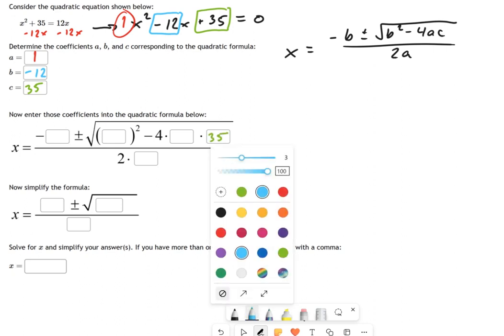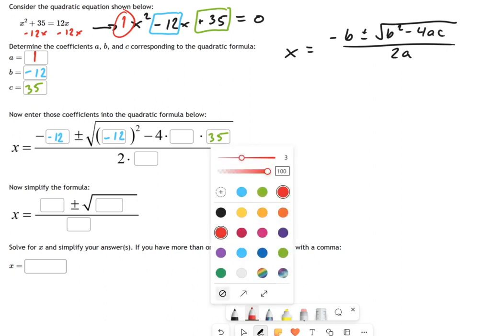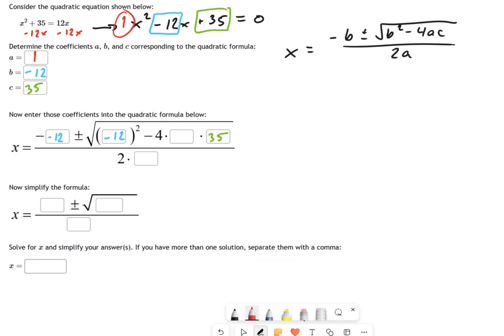Next I have b, which goes in several places. I have a negative 12 right here and a negative 12 right here. Then I've got some a's that need to get sorted out. My a value is 1—that's pretty easy. There's a 1 and there's 1.